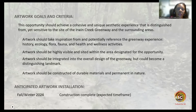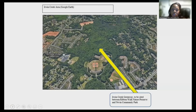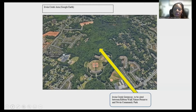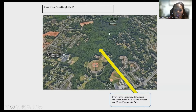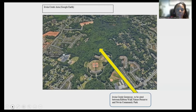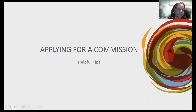This is an area map pulled from Google Earth showing how this area is backdrop by Ribbon Walk Nature Preserve as well as Allen Hills Park and Nevin Community Park. The arrow is pointing to the green space area that will be impacted. That's it for the project overview.